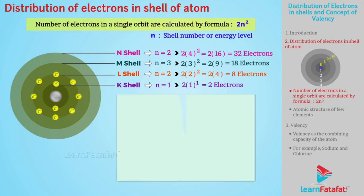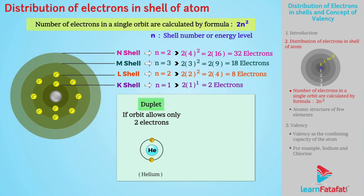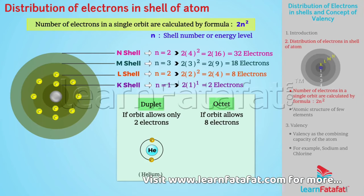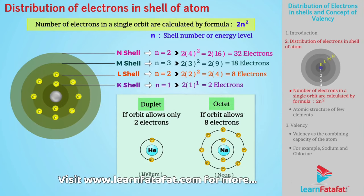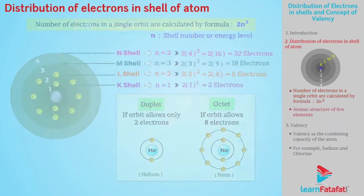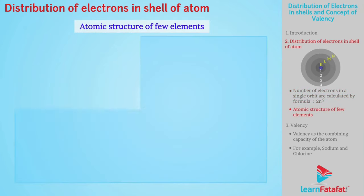We use the term duplet if an orbit allows only 2 electrons, and the term octet if an orbit allows 8 electrons to be filled in it. Electrons start filling from the inner shell towards the outermost shells. Atomic structures of a few elements are given in the table below.